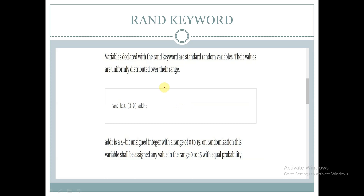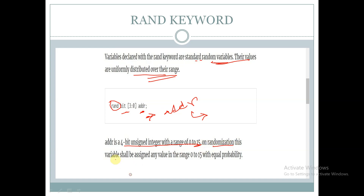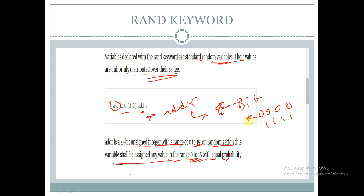rand keyword: variables declared with the rand keyword are standard random variables. Their values are uniformly distributed over their range. Here, addr is of bit data type and it is declared as rand. addr is a 4-bit unsigned integer with a range of 0 to 15. On randomization this variable shall be assigned any value in the range of 0 to 15, from 0000 to 1111. Each value has equal probability.